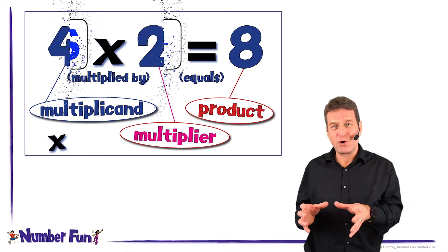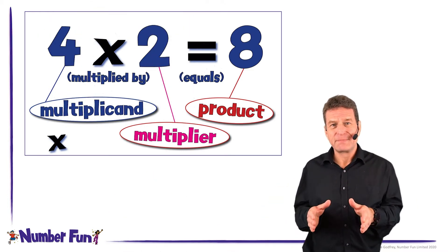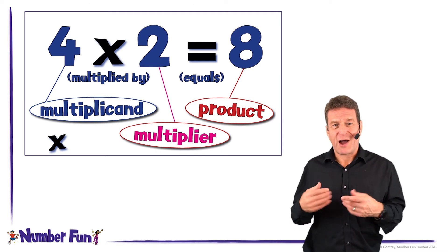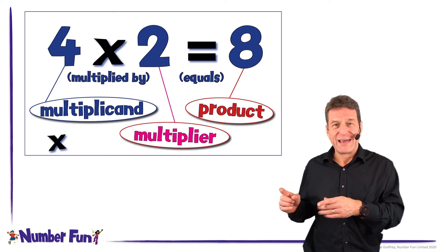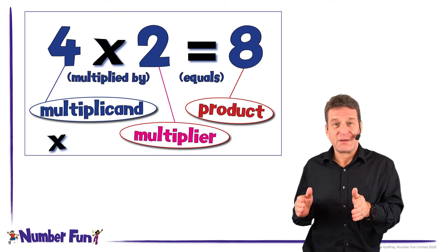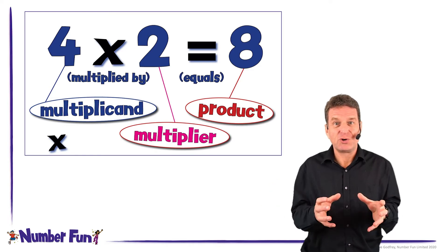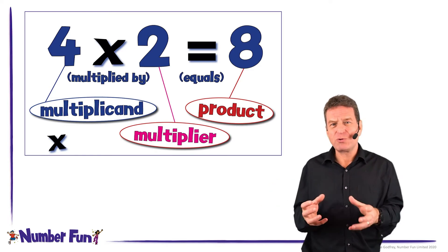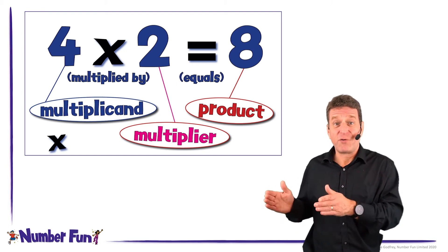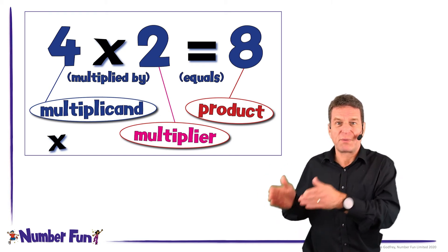Notice we're using the words multiplied by. Now when I was growing up I referred to this sort of calculation as lots of. So 4 lots of 2, so it was about 2s. But the language of multiplied by means it's about 4s, so 4 is multiplied 2 times.